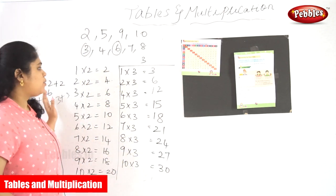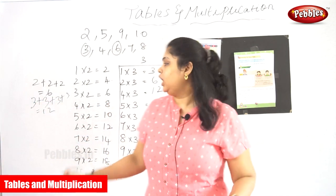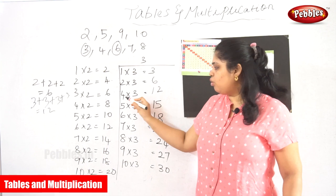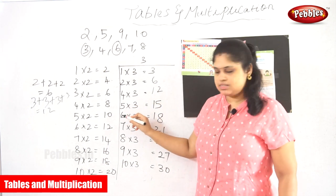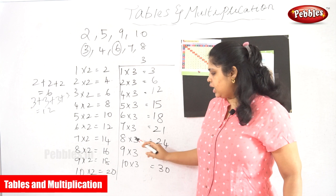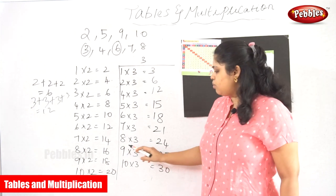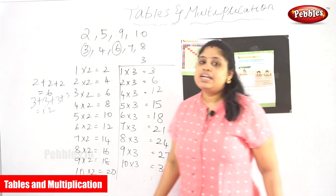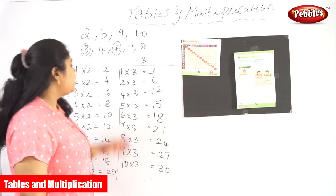What is the process behind the 3 times table? If 3 comes 2 times, 3 comes 3 times, 3 comes 4 times, 5 times, 6 times, 7 times, 8 times, 9 times, or 10 times — that will be the answer for the three times table.